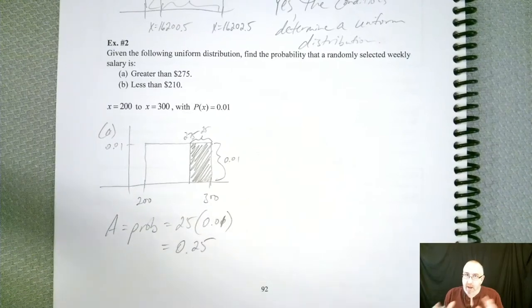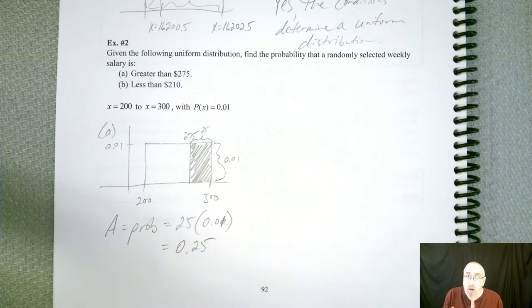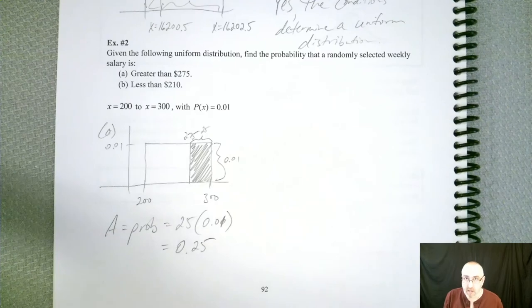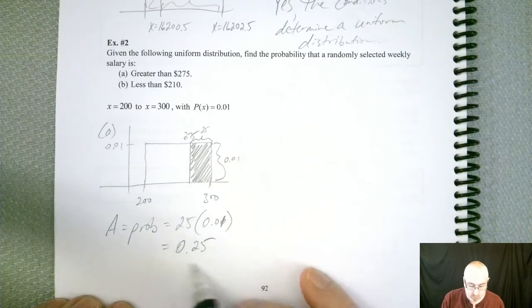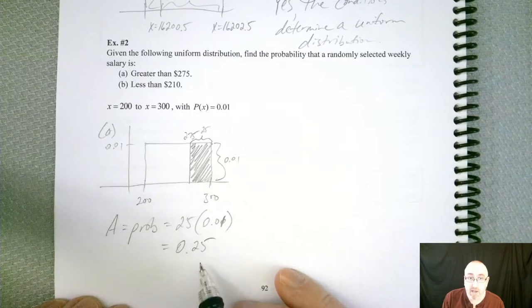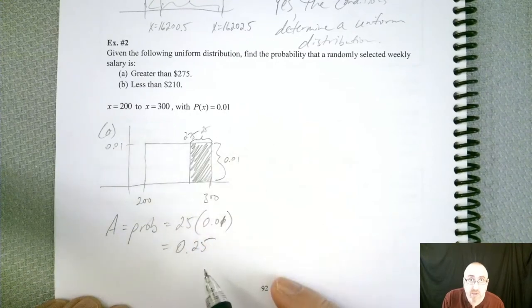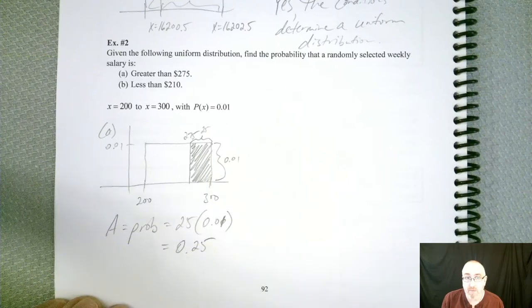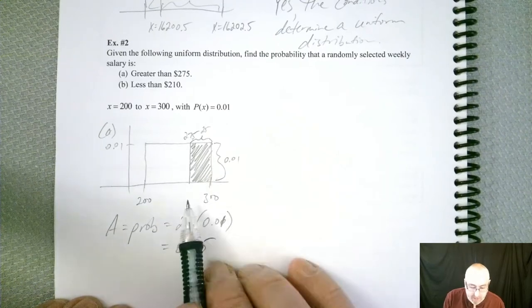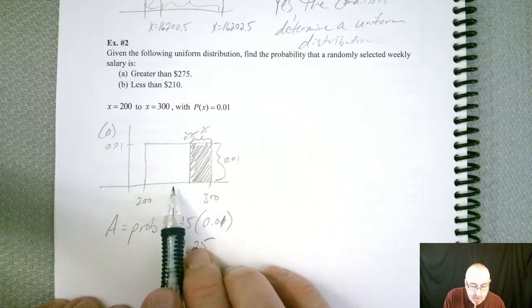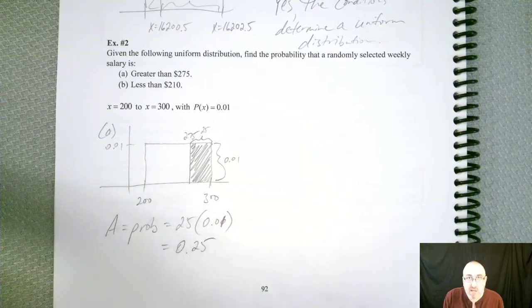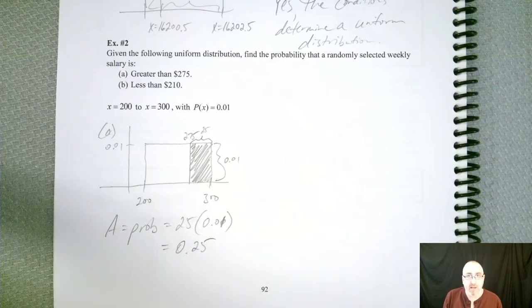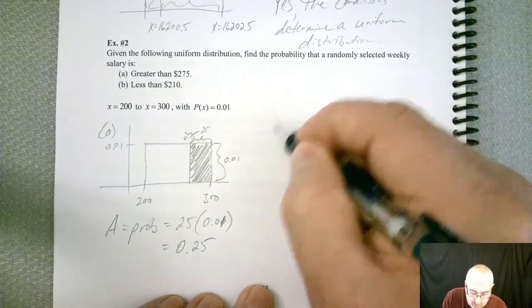So again, area and probability kind of go hand in hand, as long as the overall area of your world is 1. That's the condition. So this area, so this probability is 0.25. There's basically a 25% chance you're going to get a salary greater than $275 for this scenario. And it kind of makes sense. $250 would be right in the middle, $275. So you can see it's quarters. So a quarter of the time, you're going to get a salary greater than $275. Let's try B.